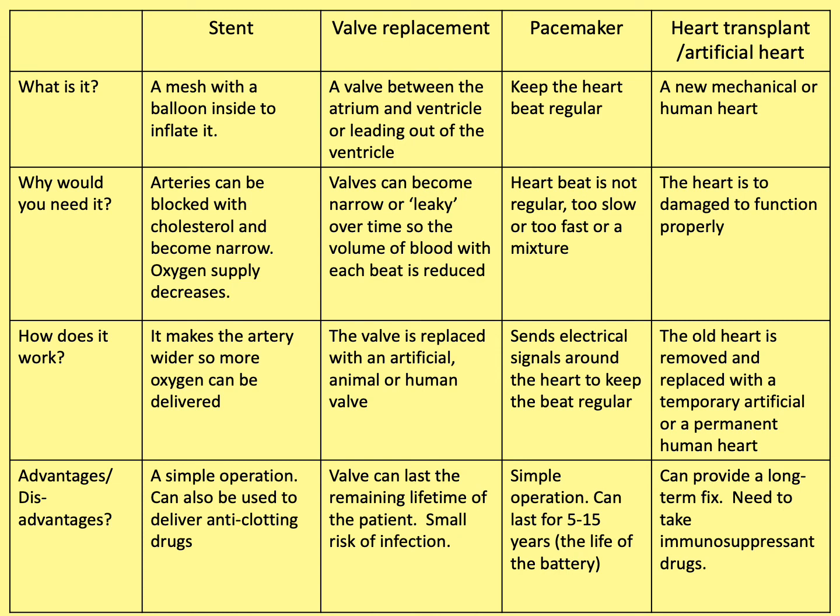The key points from this lesson are: the heart rate is controlled by a group of cells in the right atrium that form a natural pacemaker; artificial pacemakers are electrical devices used to correct irregularities in heart rhythm; and artificial hearts are occasionally used to keep patients alive while they wait for a transplant, or to allow the heart to rest as an aid to recovery.